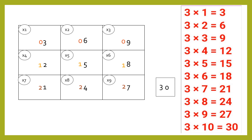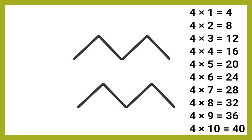To prepare the table of four, draw two zigzag lines having two top and three bottom points. To find out the unit place for the four times table, we will start from the first bottom to the first top, down to second bottom, then second top, and then last bottom. The sequence will be to put two, four, six, eight, zero, and the same sequence will continue for the next zigzag as well.